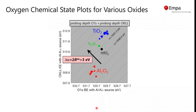Now I come to the latest results with our Qantas system on the chemical state analysis of thin oxide films. Here we present the oxygen Auger parameter in the form of a Wagner plot. We plot the oxygen 1s binding energy as measured with the aluminum source versus the oxygen KLL Auger line also measured with the aluminum source.